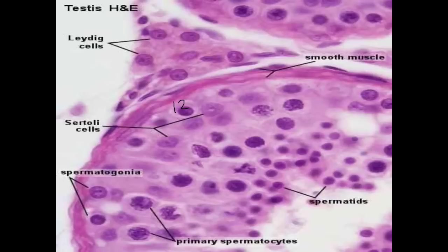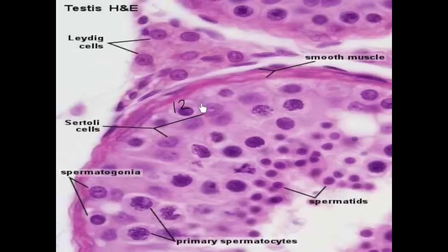Here we have also the nuclei of the Sertoli cells. The Sertoli cells actually have ill-defined boundaries, so you cannot see the side walls of these cells clearly in the light microscope. You diagnose them by their nuclei, which are large and pale with a pale acidophilic cytoplasm, and the nuclei are very near to the basement membrane. The cell actually extends from the base membrane to the lumen of the seminiferous tubule.